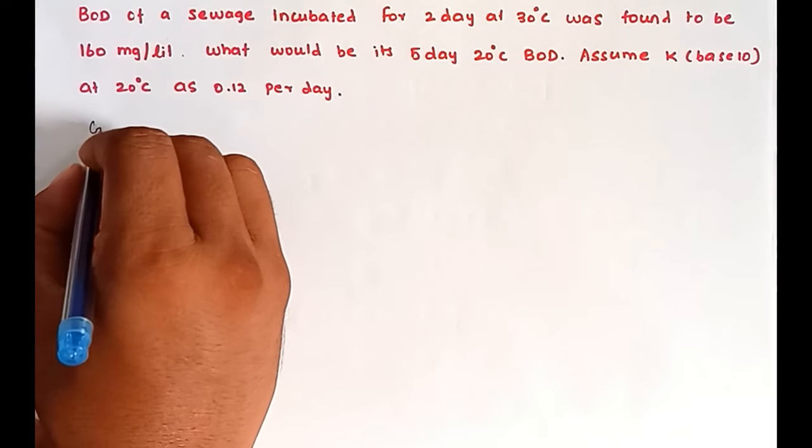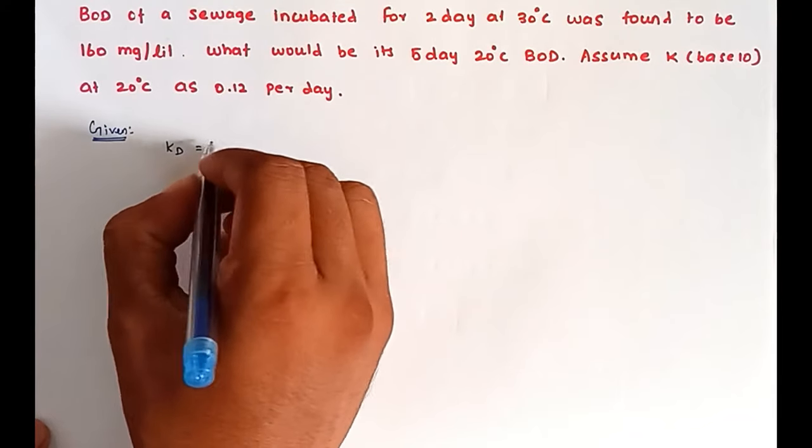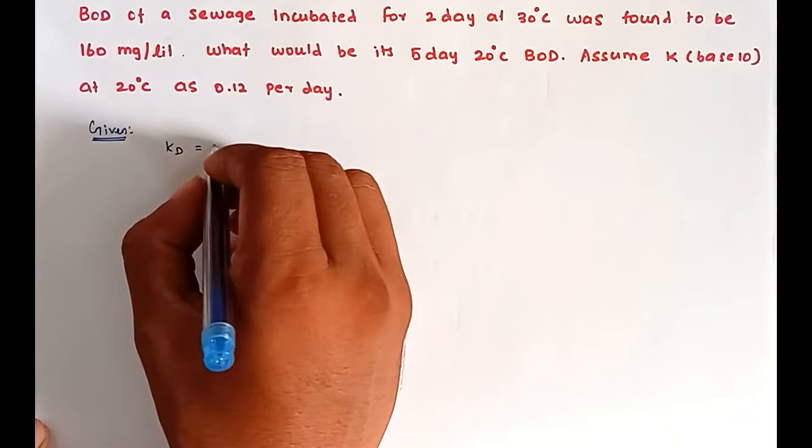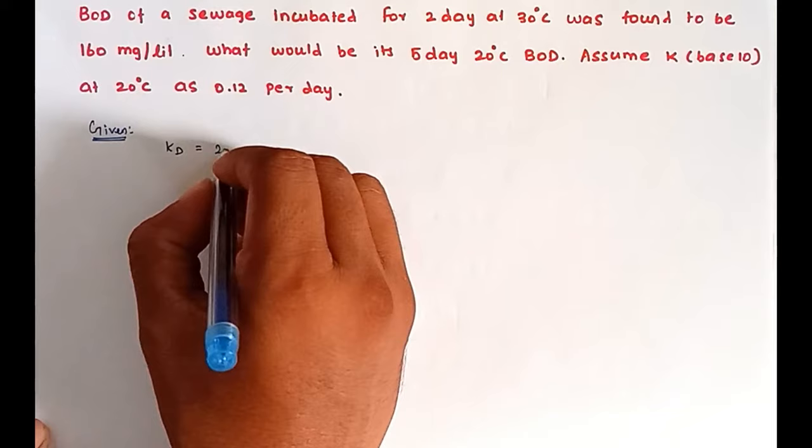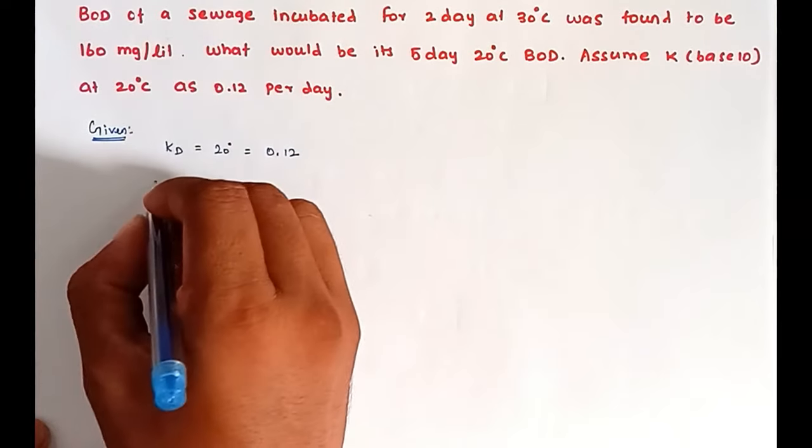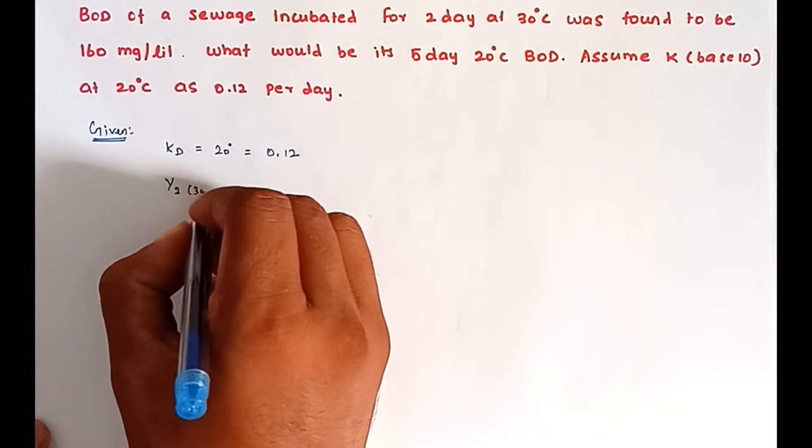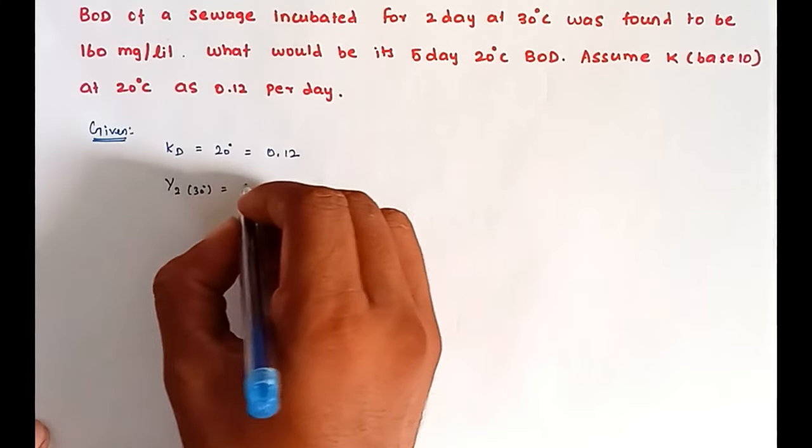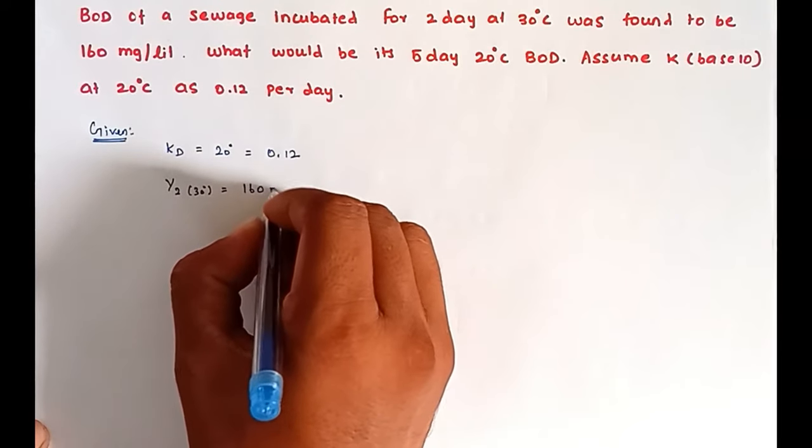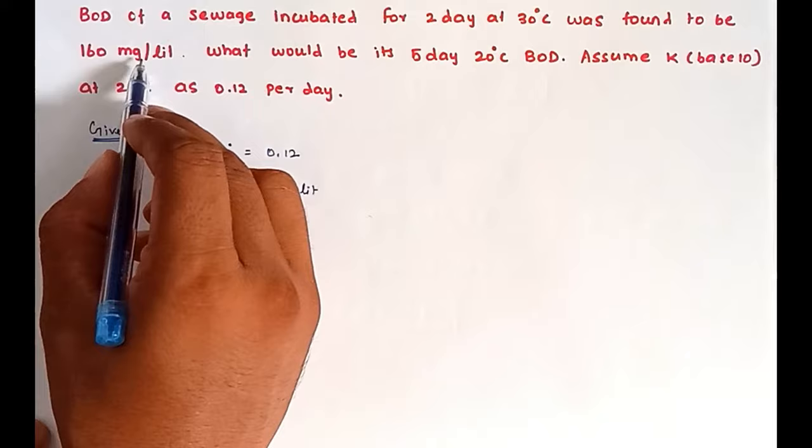Now the given values: KD at 20 degree Celsius equal to 0.12. Next, Y2 for 30 degree Celsius equal to 160 milligrams per liter.